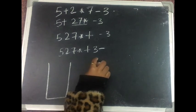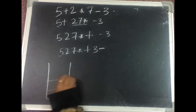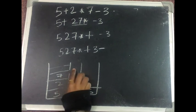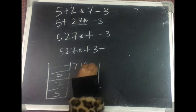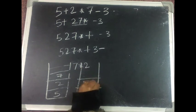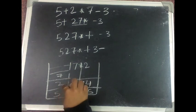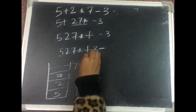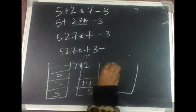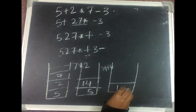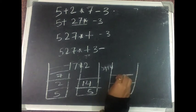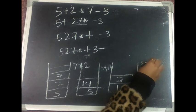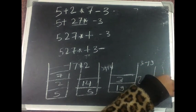Now evaluating this postfix expression using a stack: scan from left to right, pushing operands. When an operator is encountered, pop the top two items. When star is encountered, I pop 7 and 2 and store the result 14 in the stack. When plus comes, I pop 14 and 5, compute 5 plus 14 equals 19, and push 19. Then I push 3. When minus comes, I pop 19 and 3 and compute the result.